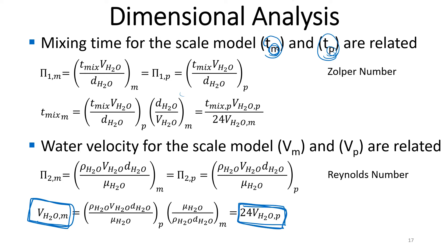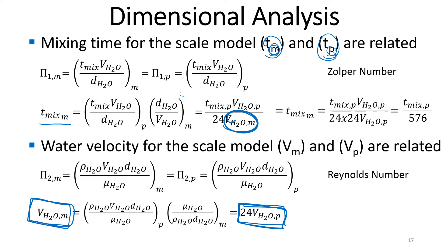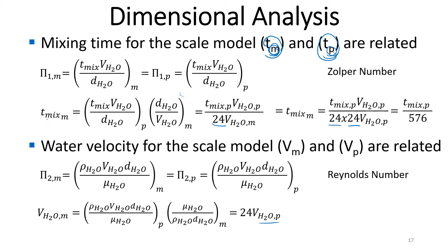Substituting this back in: the velocity of the model equals 24 times the prototype velocity, so we get 24 × 24 = 576. We conclude that mixing time in the model represents 1/576th of that in the prototype. So if mixing can be done in the model tank in one minute, it will take 576 minutes for that to occur in the full-scale Edwin Gott.